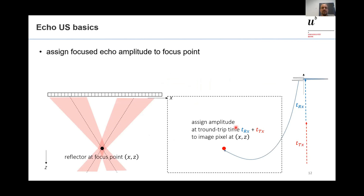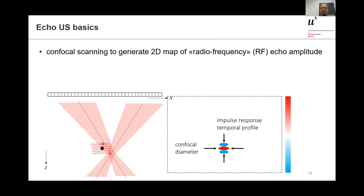Knowing the transmitted and receiving focused beams, we take the summed signal received at the total round-trip time — consisting of the transmit time from array to scatterer plus receive time back to the array. This time assigns the value to a certain depth, corresponding to speed of sound times total round-trip time. By scanning the confocal beams over the imaging plane, we receive an echo response. The diameter is determined by the confocal beam diameter, and the axial profile is determined by the impulse response of the transducer.